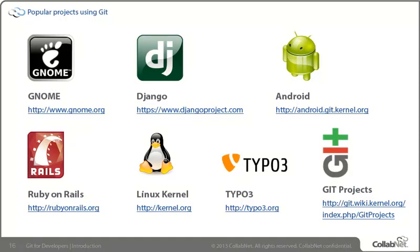Since Git's initial primary use was around open source, it's helpful to understand some of the popular projects utilizing it. We've talked about Android and Linux development, but others include the GNOME and Ruby on Rails projects — attesting to the role and position that Git now has in the version control marketplace, most particularly in open source.